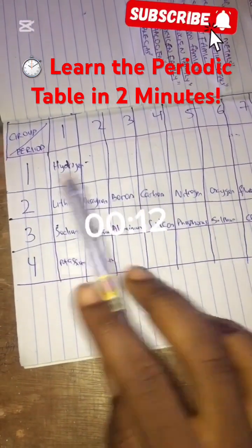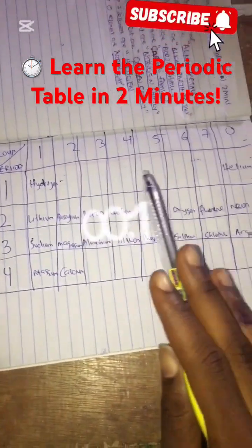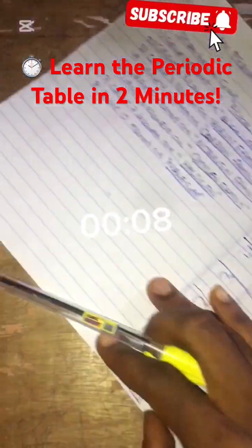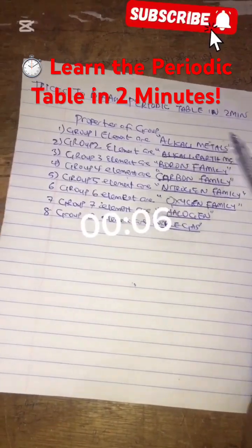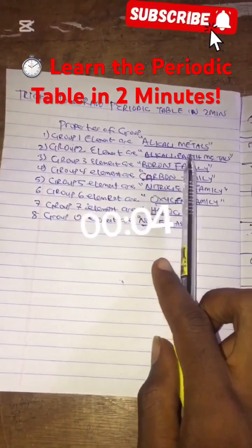If you want to write the periodic table, omit this two to seven and write the 20 elements in the box and you'll get it correctly. Now these are the group one elements: alkali, group two: alkaline earth metal. You can screenshot it.